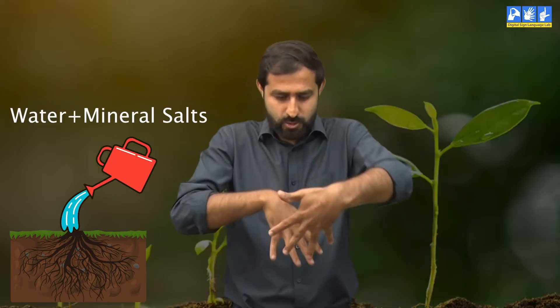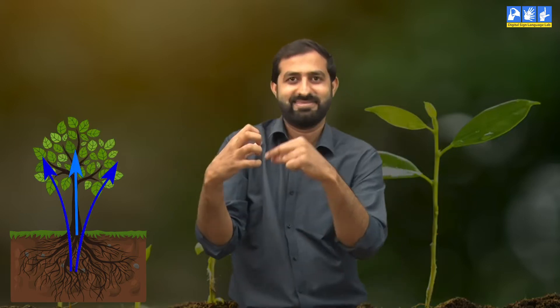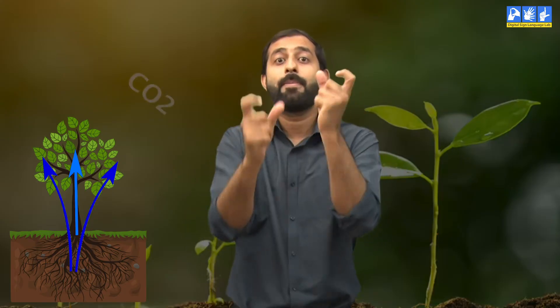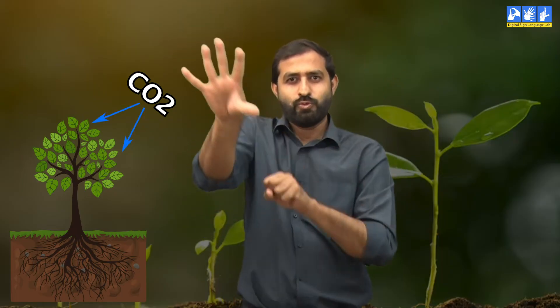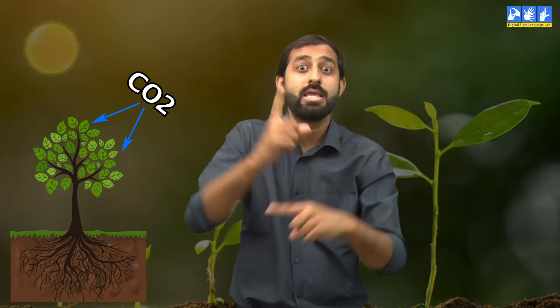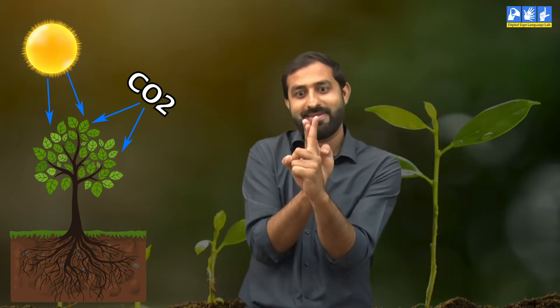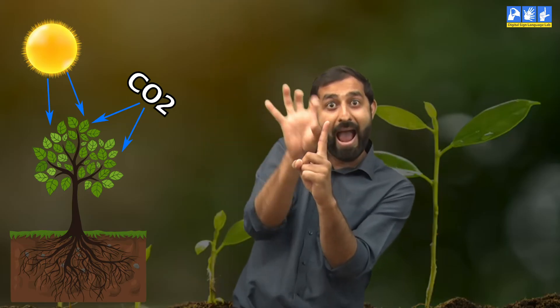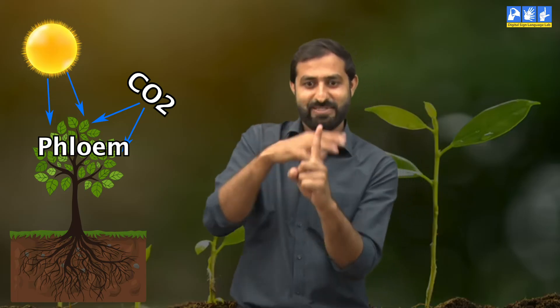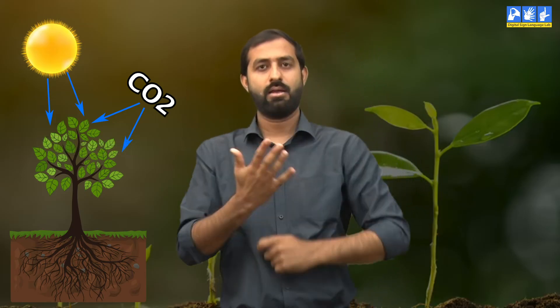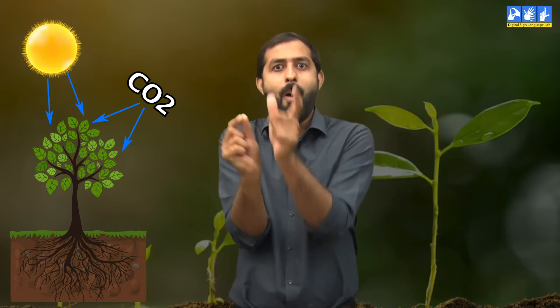During photosynthesis, plant roots absorb water and mineral salts from the soil. Then the raw sap — a mixture of water and mineral salts — travels from the roots through the stem to the leaves. In the leaves, water and mineral salts mix with carbon dioxide and sunlight is absorbed through chlorophyll. After this, the living tissues spread the prepared food to the rest of the plant. These tissues are called phloem.